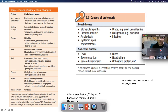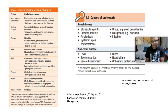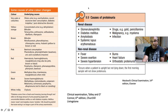Causes of proteinuria: renal causes include glomerulonephritis, diabetes mellitus, amyloidosis, SLE, drugs such as gold and penicillamine, malignancy such as myeloma, and infection. Non-renal causes include fever, severe exertion, burns, heart failure, orthostatic proteinuria — which occurs when the patient is upright but not lying down (the first morning urine sample will not show proteinuria) — and severe hypertension.